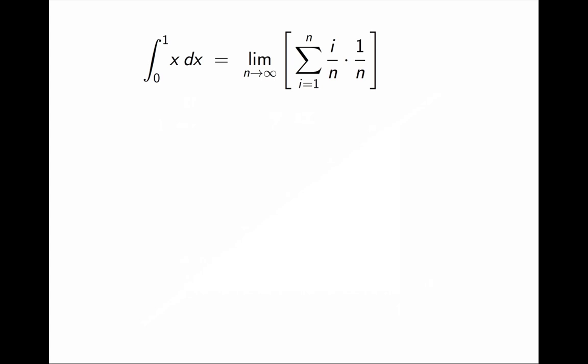First, for the purpose of the sum, the variable is i, and n is a constant. n will be the variable for the purpose of the limit, but a constant for the purpose of the sum. So I can factor 1/n² out of the sum. Now we have the sum from i equals 1 to n of i. That is the sum of the first n positive integers. There's a standard identity for it: it is n(n+1)/2.